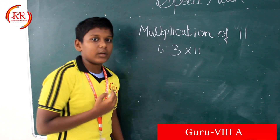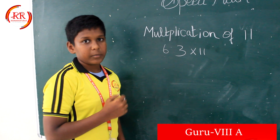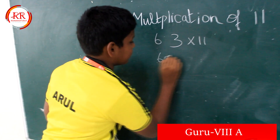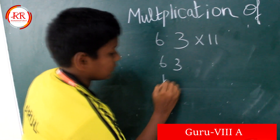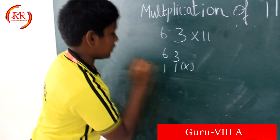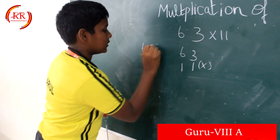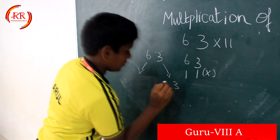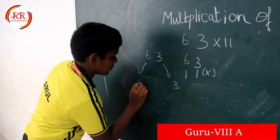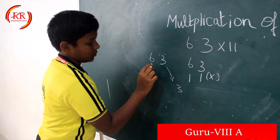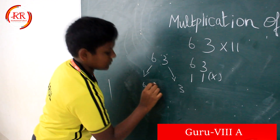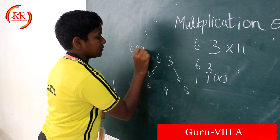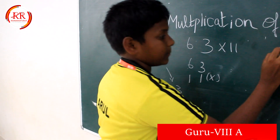Good morning to all. Today I am going to teach you the easy method of multiplication by 11. Normally we would multiply in this method, but now take 63. Place 6 here. Then we want to add these 2 numbers: 6 plus 3. So the answer is 693. Let us check the answer.